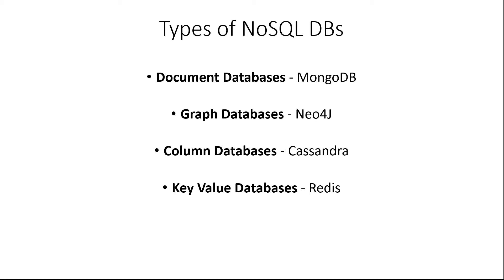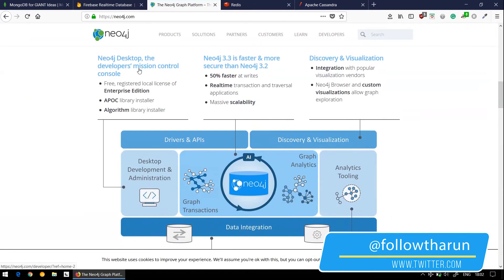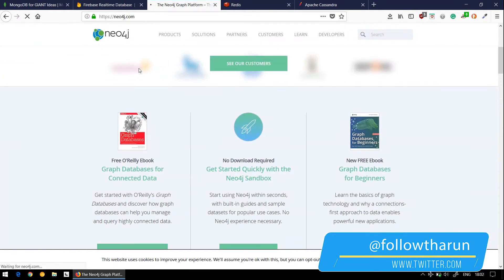The next type we have is graph databases. Graph stores are used to store information about networks of data, such as social connections. Graphs include a lot of nodes, edges, and vertices — it's pretty complex. It is used for storing huge amounts of data, though the learning curve is slightly tough. One example is Neo4j — this is the official website for Neo4j if you want to have a look at it.